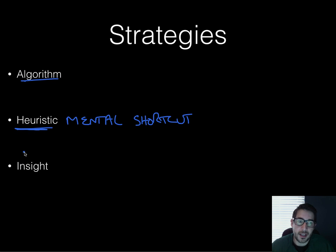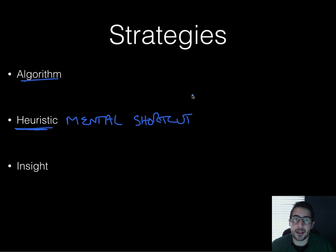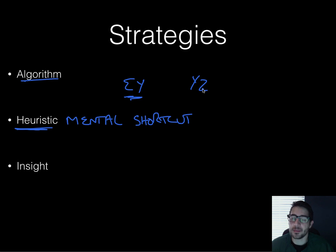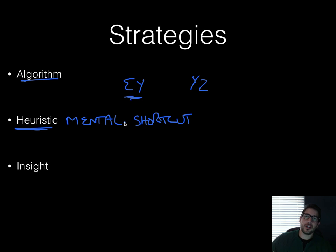For instance, if I asked you what those letters represented, you might not try putting an E followed by a Y very often because you never see that combination in real life, or a Y followed by a Z. You'd say, I'm never going to see this, I'm not even going to try it. And that would be a heuristic.